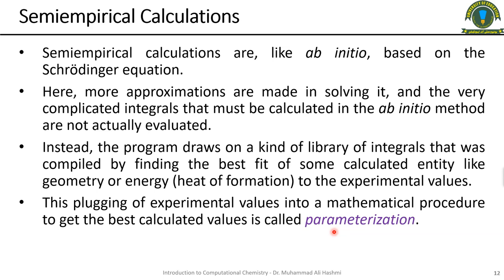Semi-empirical calculations are like ab initio — also based on the Schrödinger equation — but more approximations are made in solving it, and the very complicated integrals that must be calculated in the ab initio method are not actually evaluated. Instead, a library of integrals is compiled by finding the best fit to experimental data for entities like geometry, energy, or heat of formation.